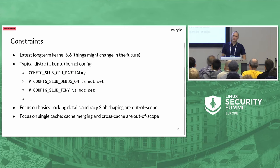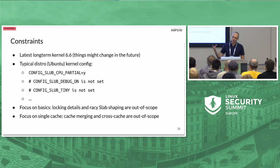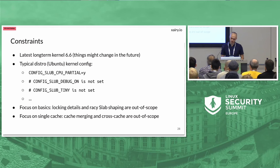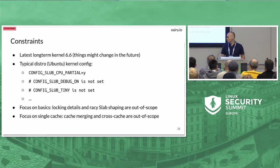To understand how to shape slab memory for exploiting slab bugs we need to understand the internals of the allocator. We're targeting the latest long-term kernel 6.6, since the SLUB allocator evolves — for example there have been changes in 6.8. We assume the most default configuration: per-CPU partial slabs enabled, SLUB debug disabled as it typically is on production kernels, and not using the tiny allocator variant. We'll also leave out details about locking since we're focused on exploitation, not performance. We'll focus on a single cache, excluding cross-cache corruptions and cache merging.